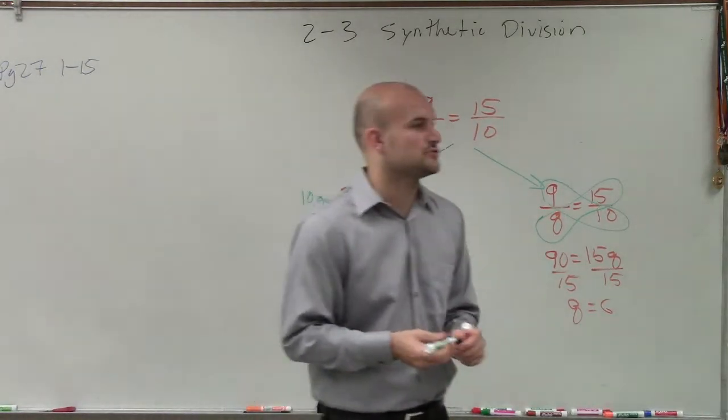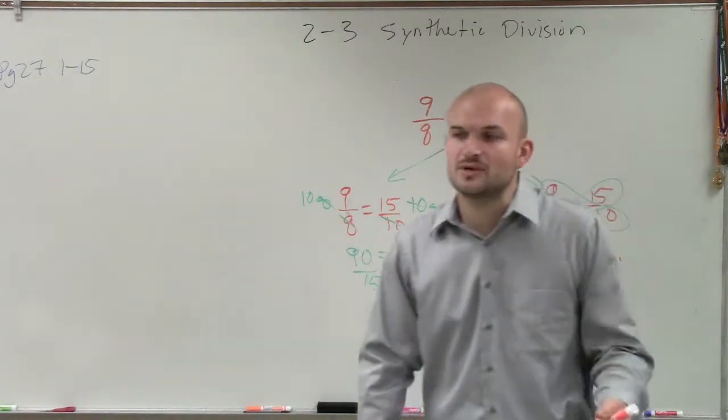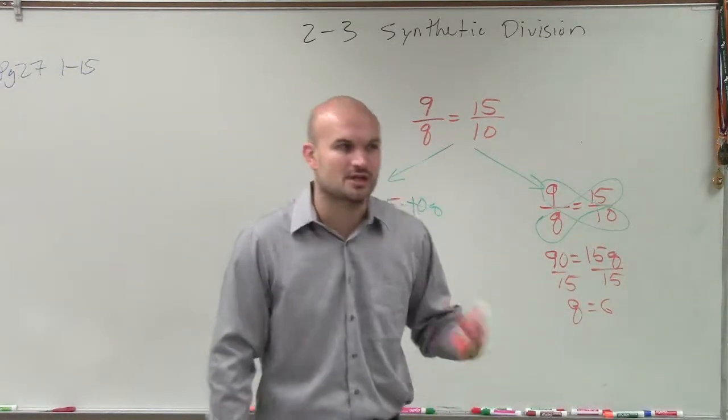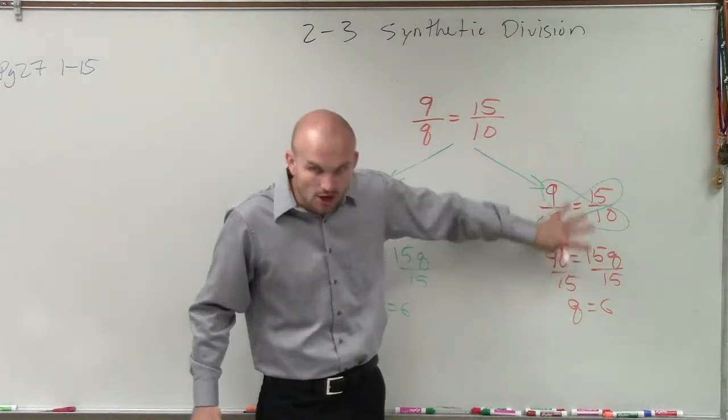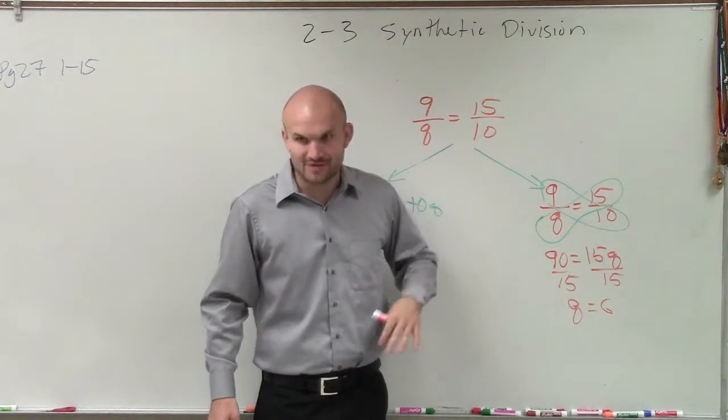So there are two different ways. I know you guys would probably prefer the cross multiplication method, which is perfectly fine. There's nothing wrong with that. I just want you to understand where cross multiplication comes through. It comes through solving a proportion, not multiplying fractions, right?